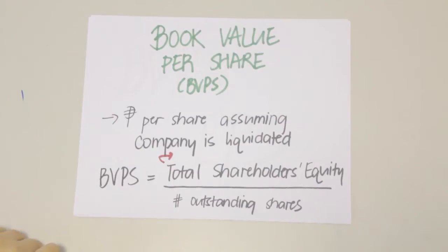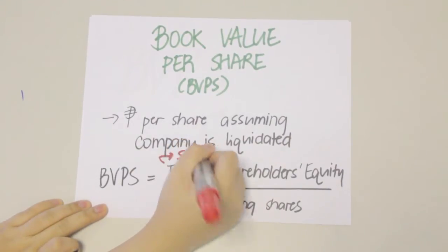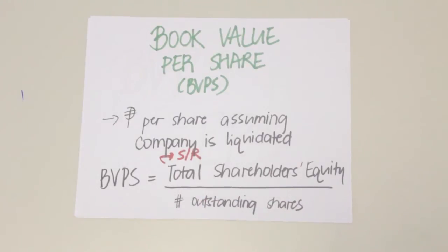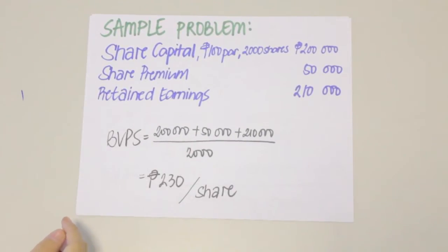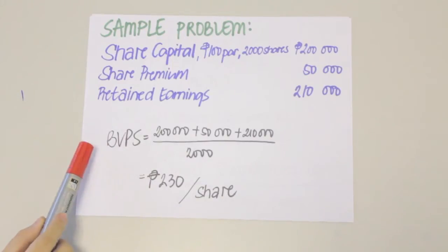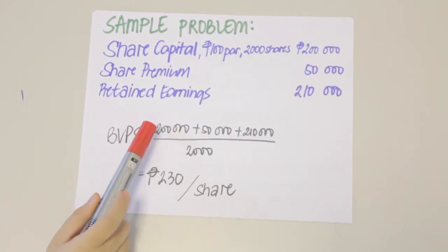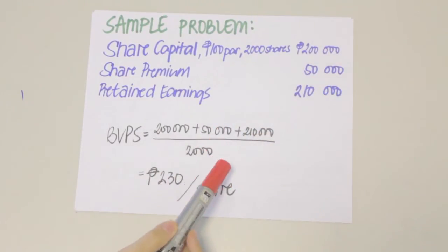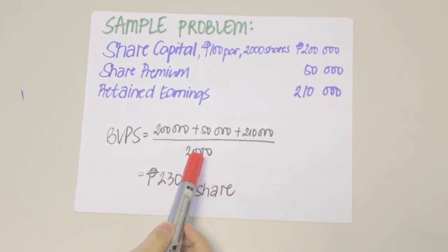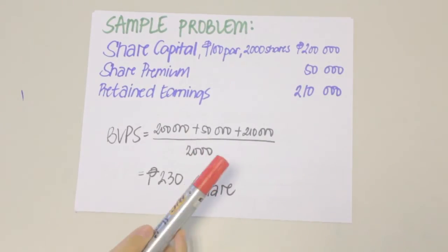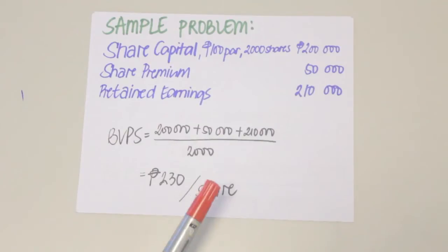Remember that when computing for book value per share, the subscriptions receivable is no longer deducted when getting your total shareholders' equity. Take this example: given that your share capital is 200,000 with 2,000 shares at 100 par value, a share premium of 50,000, and retained earnings of 210,000 pesos. To get your book value per share, add up all components to get 460,000, then divide by the total outstanding shares of 2,000, giving you 230 pesos book value per share.